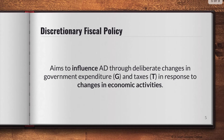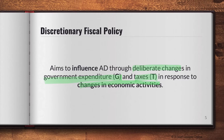Discretionary fiscal policy means that the government is directly involved. It aims to influence AD through deliberate changes in government expenditure (G) and taxes (T) in response to changes in economic activity. For instance, if there is a recession and AD is decreasing, fiscal policy can be implemented to do the opposite — to counter the fall in AD and increase it in order to ensure the economy remains stable.